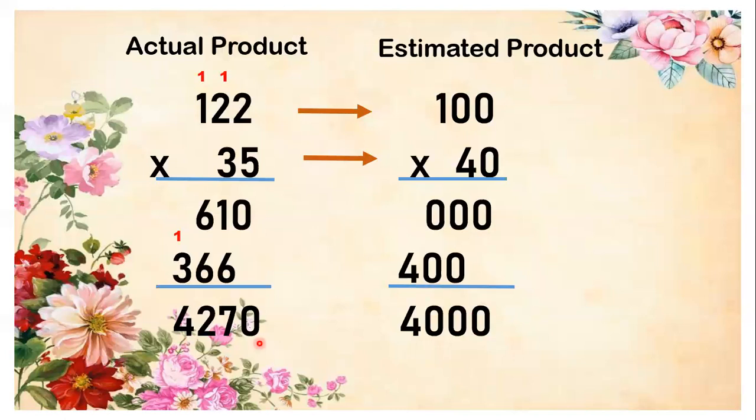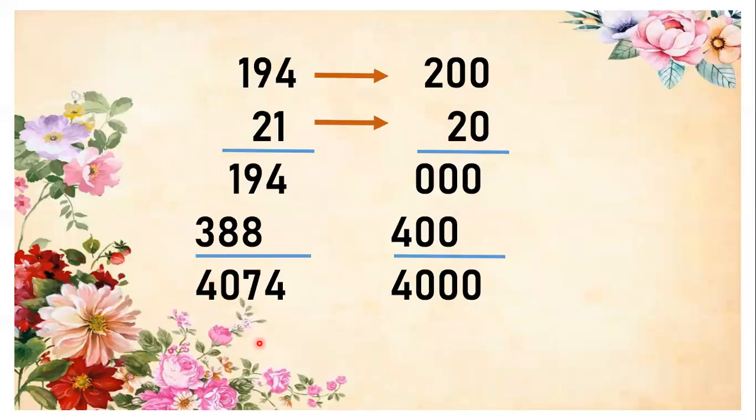Now let's have another example: 194 times 21. In the actual product, if you are going to multiply these factors, 194 and 21, it will give you a first partial product of 194 when you multiply 1 by 194. And you will get 388 when you multiply 2 by 194. And you will get a total actual product of 4,074.